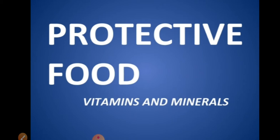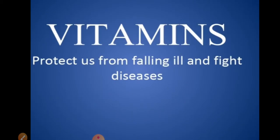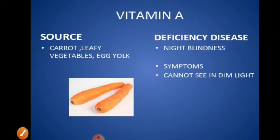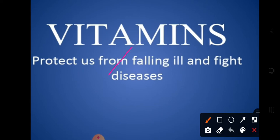Whenever you are falling ill, vitamins help protect us from illness and fight the diseases caused to our body. There are two different types of vitamins. One category is fat-soluble vitamins and the second category is water-soluble vitamins. Based on the solubility — in which type of solvent they are dissolved — we have classified vitamins into these two different categories.